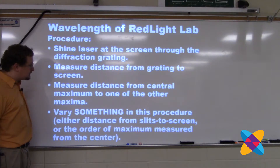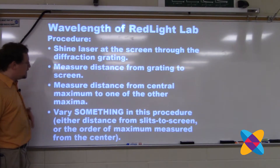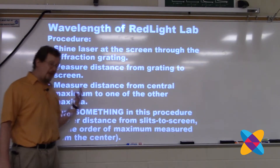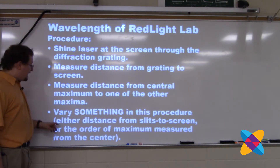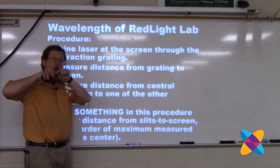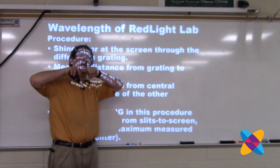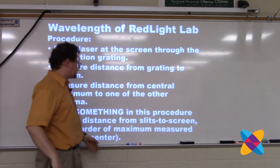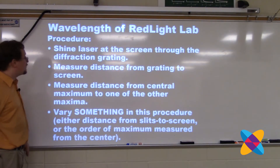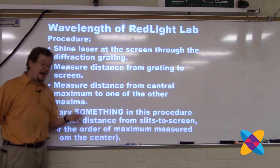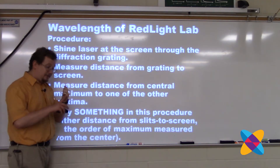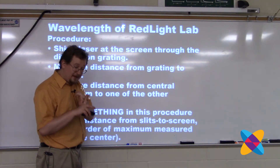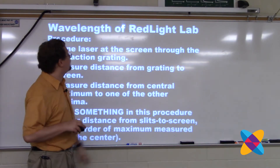They're going to measure distances from the central bright maximum to one of the other maximums on the side. I ask my students to vary something in this procedure — they can vary the slit-to-screen distance, doing three trials. They can vary how many orders of maxima they go over: one, two, or three maxima from the center. They have to vary something, do three trials, make a graph that is a line, and use the slope in order to get the wavelength of red light.